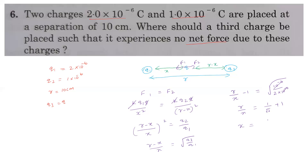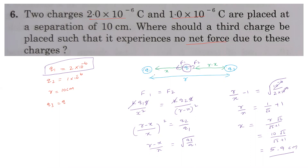Solving for x: x = r·√2 / (√2 + 1). With r = 10 cm, x = 10√2 / (√2 + 1), which simplifies to approximately 5.9 centimeters. Therefore, the third charge should be placed 5.9 cm from the greater charge q1, so that the net force on it is zero (equilibrium).